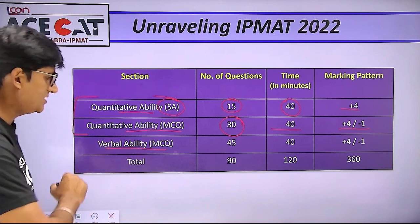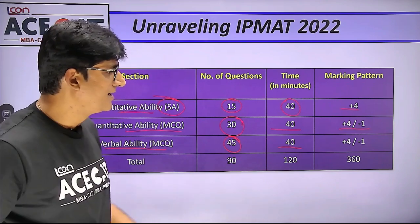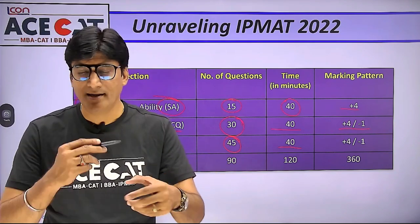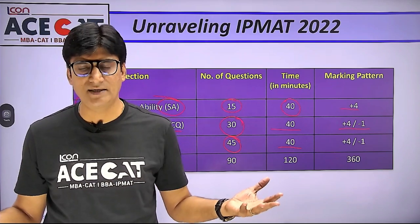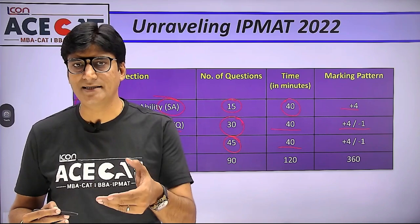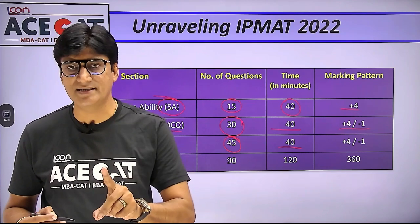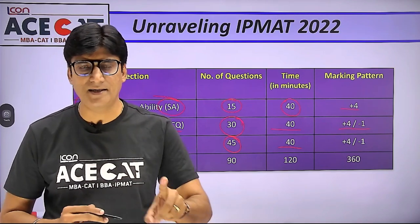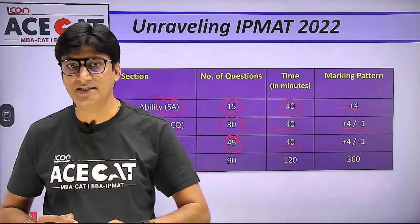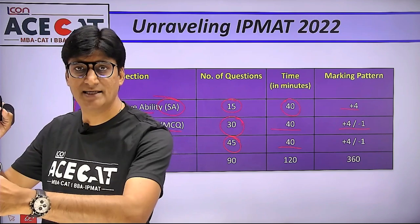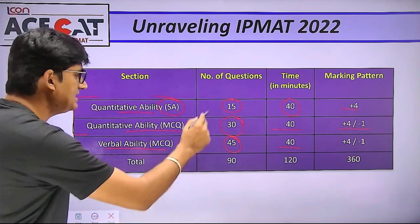The third section was English Verbal Ability — 45 questions in total, again 40 minutes of time, and marking pattern +4 and -1. In the English section, there are 3-4 questions where options are not given, similar to short answer type. But don't assume that short answer type questions in English will have no negative marking — negative marking will be there for all English questions.